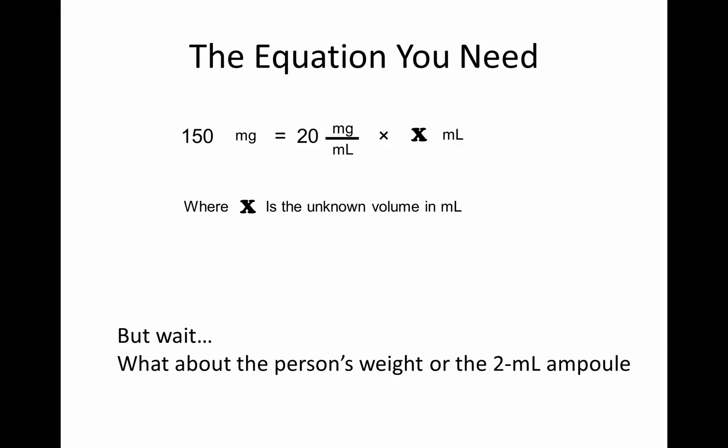So, here we return to our equation. We remember that 150 mg is the entire dose needed for the person, is equal to 20 mg per mil, the concentration, times x ml, where x is the unknown volume in milliliters. Now, but wait a minute. You're asking, you ask about what about the person's weight or the 2 ml ampule?